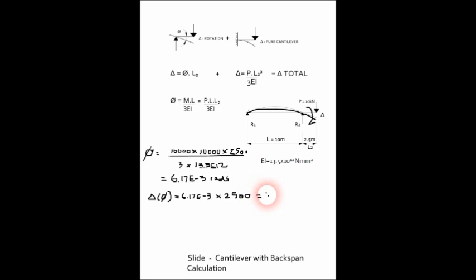And that gives us a value of 15.4 millimeters. And now we look at the cantilever pure cantilever deflection, which is additive to give you the total. We can assign that deflection C, and this is equal to p, which is 10,000 newtons, times L2 cubed, 2500 cubed, divided by three divided by EI, 13.5 to the 12.